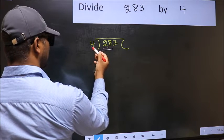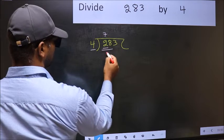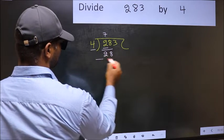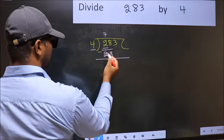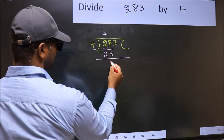When do we get 28 in 4 table? 4 times 7 is 28. Now, you should subtract. 28 minus 28, 0.